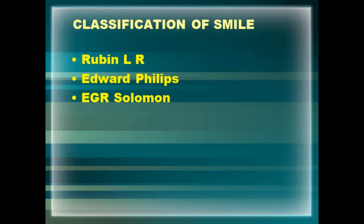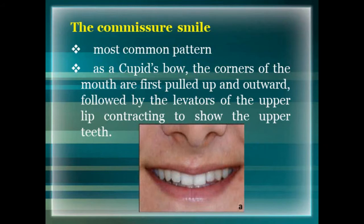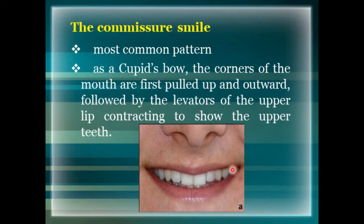There are mainly three classifications of smile: by Rubin LR, by Edward Phillips, and by Dr. EGR Solomon. Rubin LR classified smile into three types: the commissure smile, the cuspid smile, and the complex smile. The commissure smile is the most common pattern, seen in around 67% of the population. The shape of the lips is similar to that of a cupid's bow, where the corners of the mouth are first pulled up and outward, followed by the levators of the upper lip contracting, thereby showing the upper teeth.